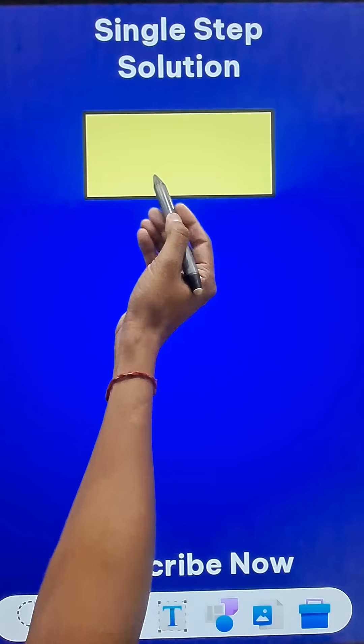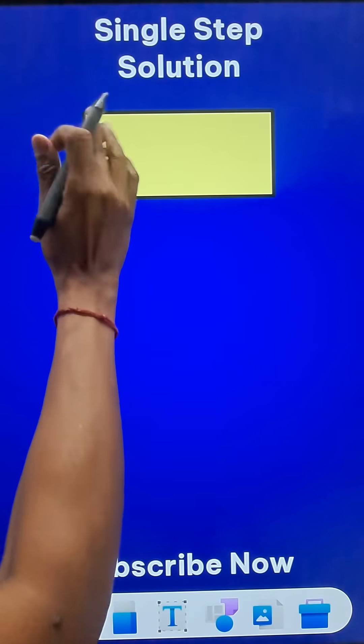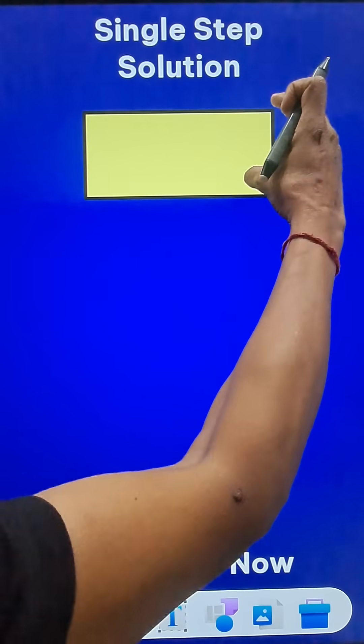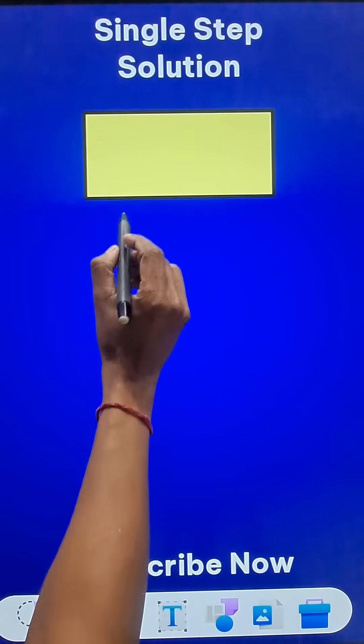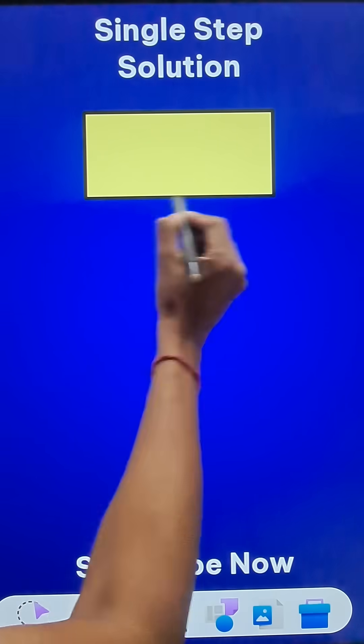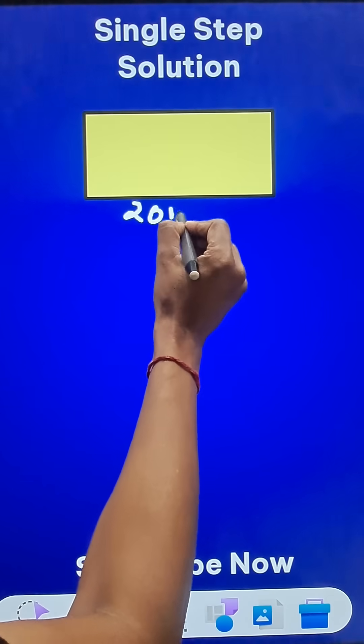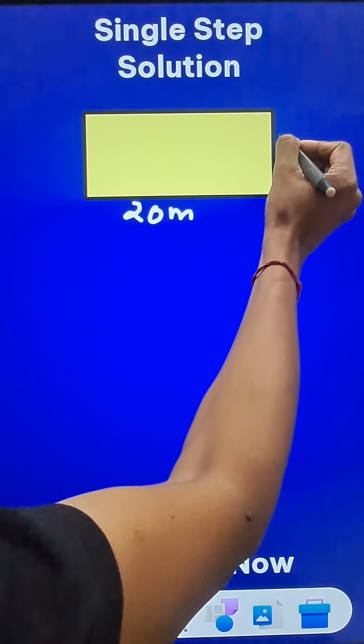Here is a short trick to find the percentage change in the area of a rectangle if the change in its dimension is given. Originally suppose the length of this rectangle was 20 meters and the width was 10 meters.